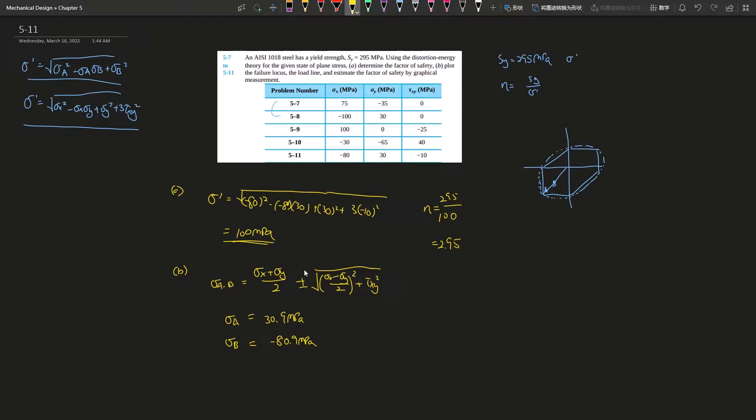Oh, my bad. I made a mistake explaining this piece of information. This should be a straight line, so point A—from zero to point A—is basically 30.9 and negative 80.9.